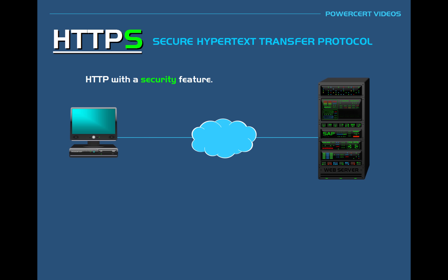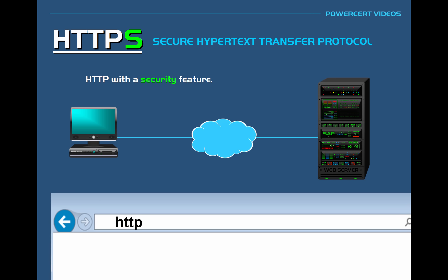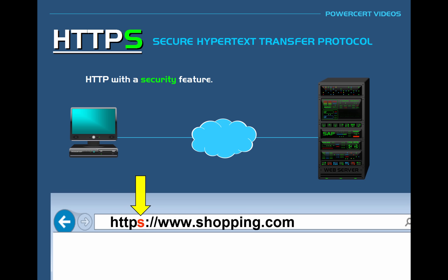For example, if you were to go to a website that requires you to enter personal information such as passwords or credit card numbers, you will notice that an 'S' will be added to the HTTP in the web address. This 'S' indicates that you are now using secure HTTP and have entered a secure website where sensitive data is going to be passed and protected. In addition, many web browsers will also show a padlock symbol in the address bar to indicate that secure HTTP is being used.